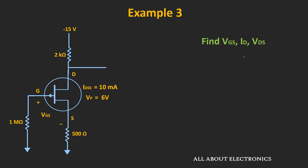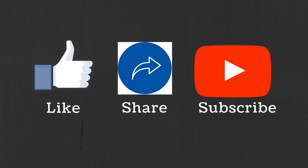This is all about the self-biased configuration of the JFET. I hope you understood how the JFET can be configured in the self-biased configuration. In the next video, we will learn about the voltage divider bias configuration. If you have any questions or suggestions, let me know in the comments below. If you liked this video, hit the like button and subscribe to the channel for more such videos.